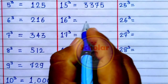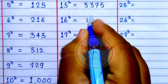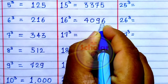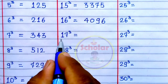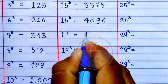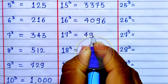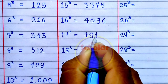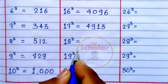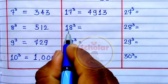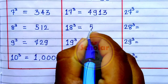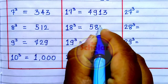Cube of 16 is 4096. Cube of 17 is 4913. Cube of 18 is 5832.